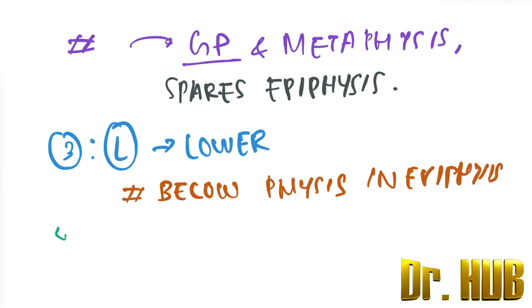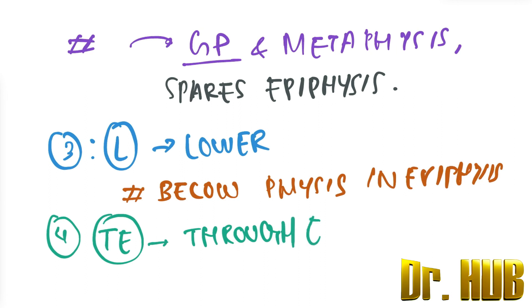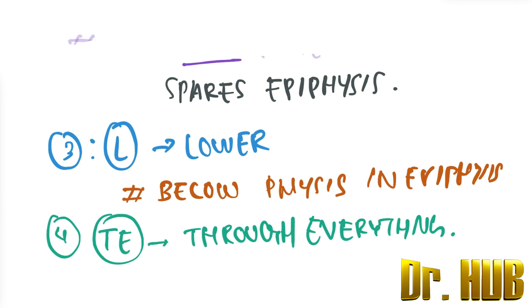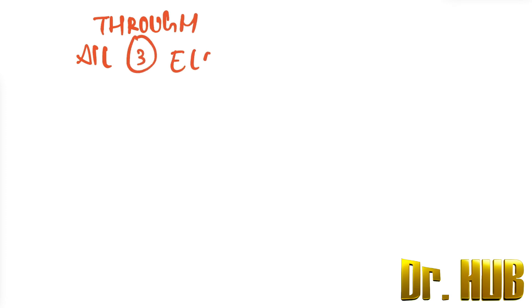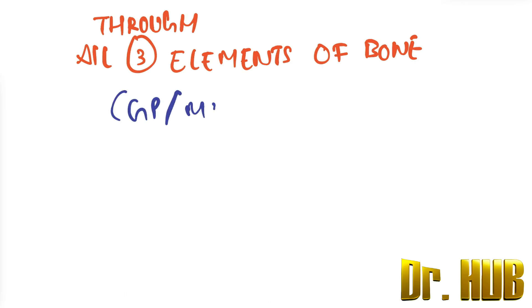Type 4 corresponds to T, meaning 'through everything.' It is a fracture through all three elements of bone: the growth plate, the metaphysis, and the epiphysis.